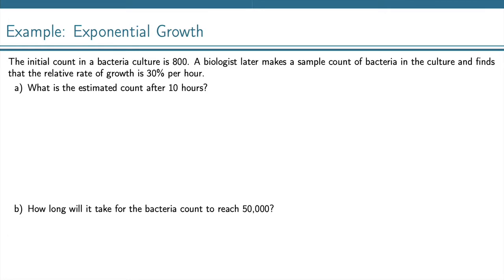Let's look at an example. The initial count in a bacteria culture is 800. A biologist later makes a sample count and finds that the relative growth rate is 30% per hour. What is the estimated count after 10 hours? This 30% per hour is a relative growth rate, so r = 0.3. My exponential model is p(t) = 800·e^(0.3t).